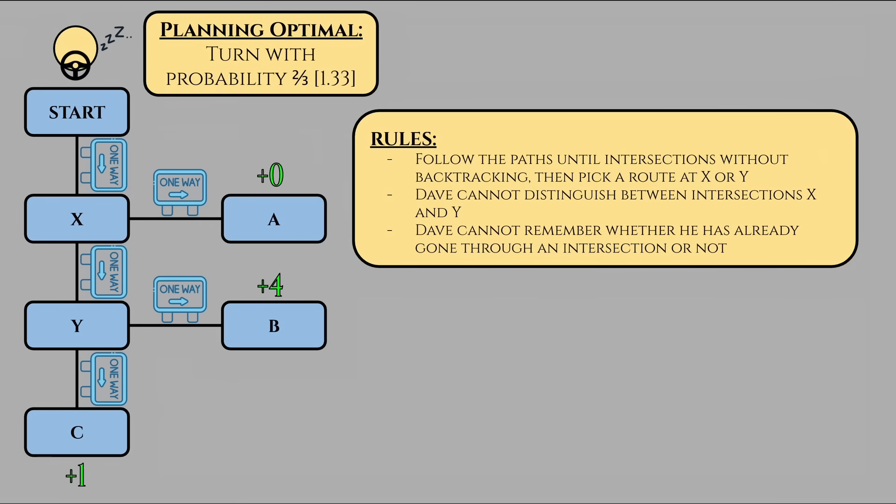Anyway, this strategy of always turning with probability two-thirds is what Aumann, Hart, and Perry call planning optimal, where we create some strategy known prior to ever encountering an intersection to begin with. For the sake of problem continuity, maybe Dave had this value written down on his map.